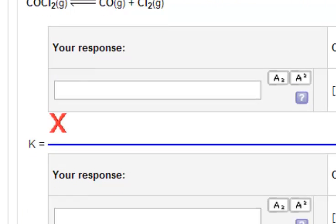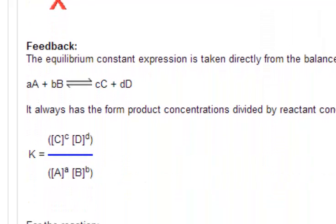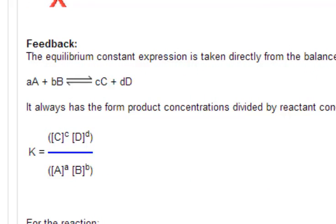Scroll down to the feedback to see what the answer is and explain it from there. The equilibrium constant is defined as the product of the products, meaning the mathematical product. You multiply the concentration of the products, C and D, and divide it by the product of the reactant concentrations.